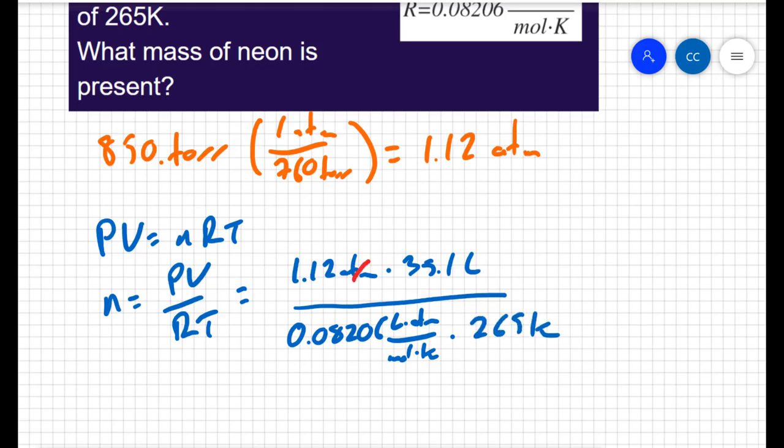I know my pressure in the correct units is 1.12 atmospheres, and we are given a volume of 35.1 liters. My ideal gas constant is 0.08206 liters times atmospheres over moles times kelvin.